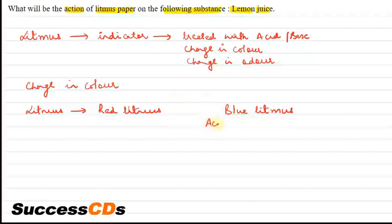We write here: acid turns blue litmus to red. And base turns red litmus to blue.